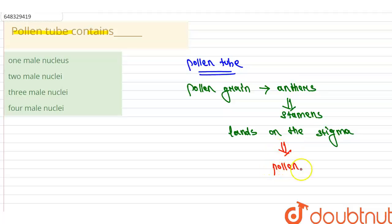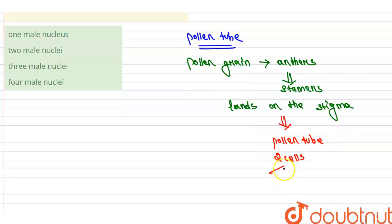Then what happens? There are two cells inside the pollen grain: a vegetative cell and a generative cell. So this generative cell divides mitotically. What are the two cells present? One is the generative cell and the other one is the vegetative cell.